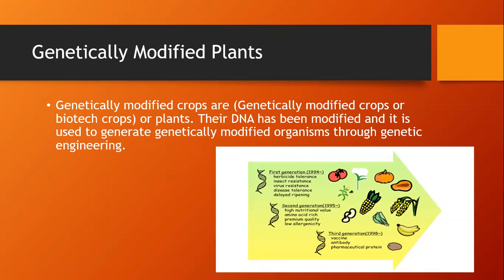There are three generations of genetically modified plants. The first generation was occurring in 1994, which has herbicide tolerance, insect resistance, virus resistance, disease tolerance, and delayed ripening characteristics.